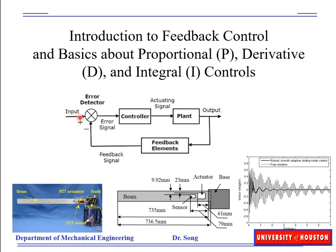This is a feedback process. We have an input — in this case for vibration control, the input is zero. We would like to have zero vibration. The error is measured from this vibration. Through a feedback control — very often we use negative feedback — this is the general block diagram of a control system.